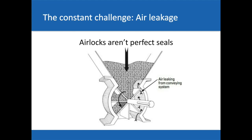There's a constant challenge with pneumatic conveying systems and airlocks, and that is air leakage. When you have to factor this into your valve, you still have to deal with air leakage and the inefficiencies that go with it. The term 'airlock' is kind of a lie, because airlocks cannot have a perfect seal — clearances between the rotor, the housing, and the end plates are needed for the valve to rotate. However, the air leakage can be minimized by doing a few things.